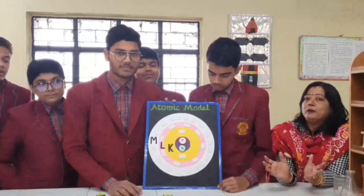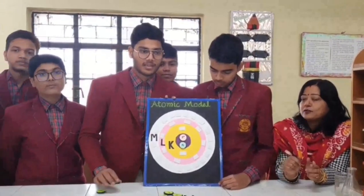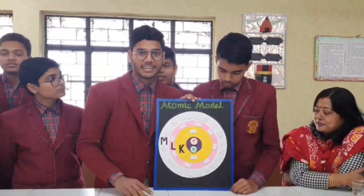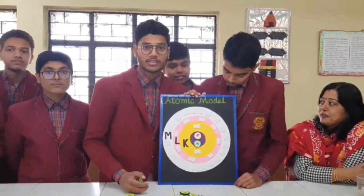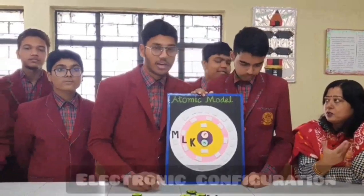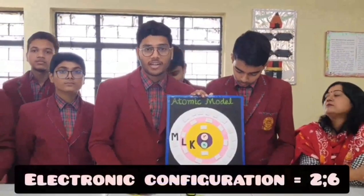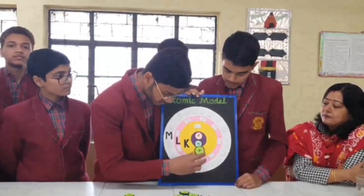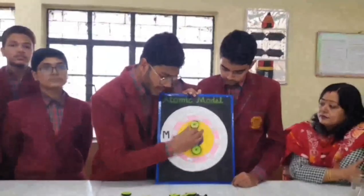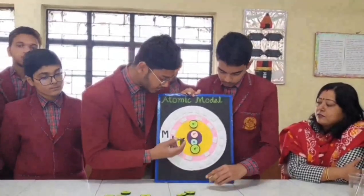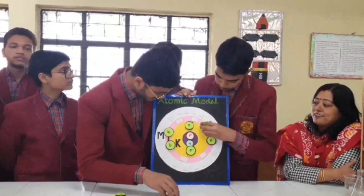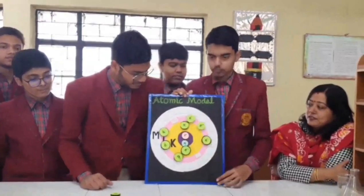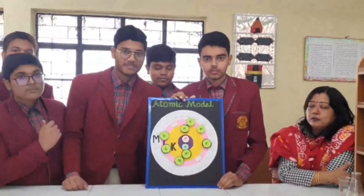Manas will show you the atomic model of oxygen — sorry, oxygen. As you know, the atomic number of oxygen is 8. The electronic configuration is 2.6. In the first shell we will put 2 electrons, and in the second cell we will put 6 electrons. He also helped put the 6 electrons. Count it — is there 6 electrons? Yes. Very nice model of the oxygen.